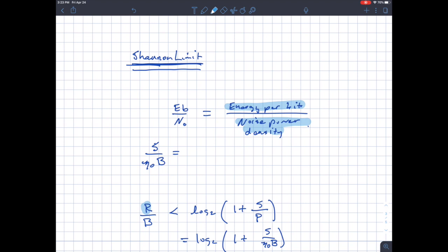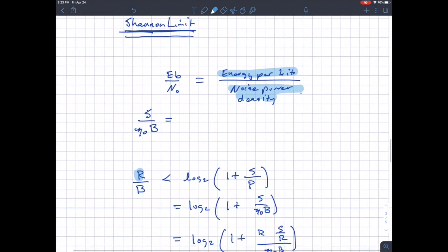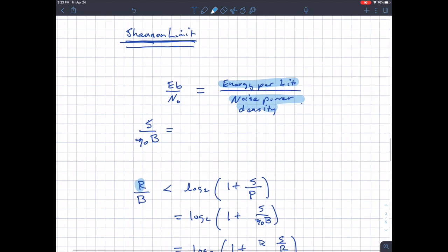A lot of modulation schemes, you work with Eb over n0 as a design parameter. To get a certain probability of error, you need a certain value for Eb over n0. So if you ever take a different type of communication theory course where they're looking at more specific modulation schemes, Eb over n0 becomes an important parameter. So I wanted to talk about this in relationship to something called the Shannon Limit.